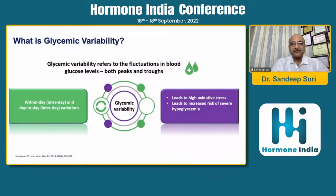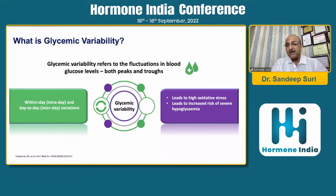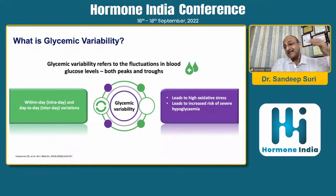What is glycemic variability? It refers to fluctuations in blood glucose levels - both peaks and drops. It can be intraday, that is within a day, or it can be day-to-day variability. But it leads to high oxidative stress - each and every fluctuation leads to high oxidative stress, whether it is upward or downward.